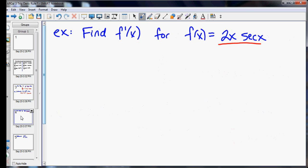But, on this example, we have 2x times secant x. So it's a variable, or something with a variable, 2x, being multiplied by the trig function secant x. So we'll use the product rule.